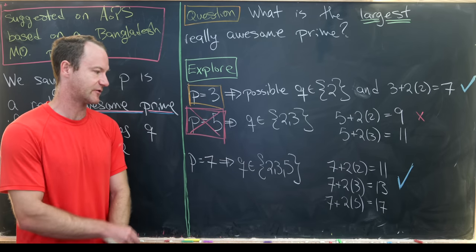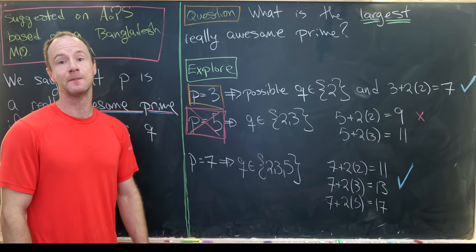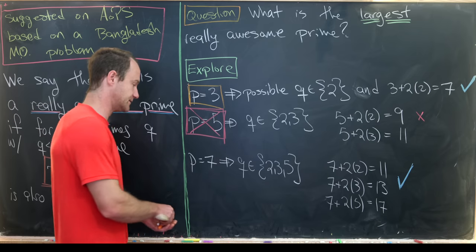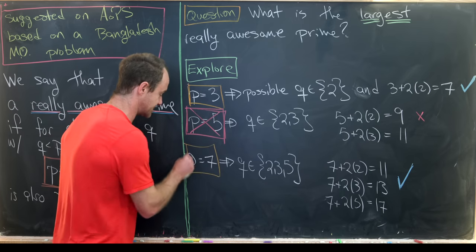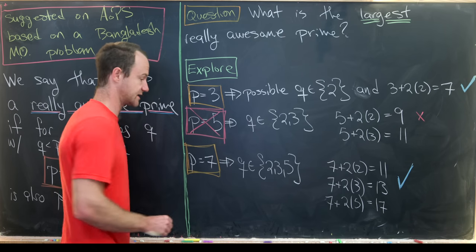So 7 plus 2 times 2 is 11. 7 plus 2 times 3 is 13. And 7 plus 2 times 5 is 17. Those are all primes. So that makes p equals 7 a really awesome prime.